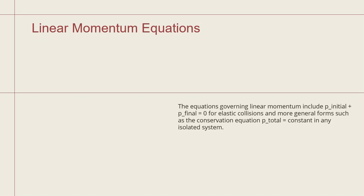How to write the equation for linear momentum? The linear momentum includes initial momentum plus final momentum which equals zero for elastic collisions. In more general form, the conservation equation shows that total linear momentum is constant in any isolated system.